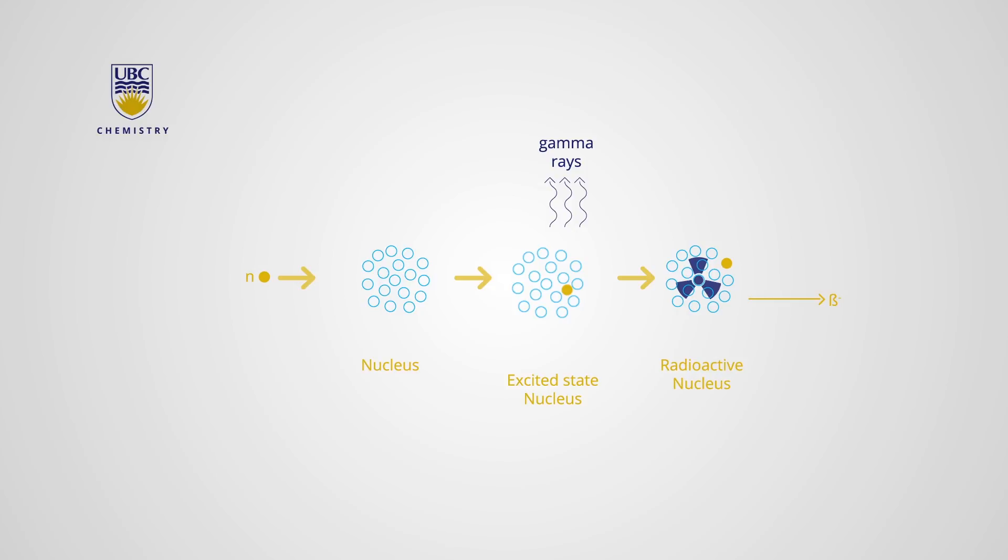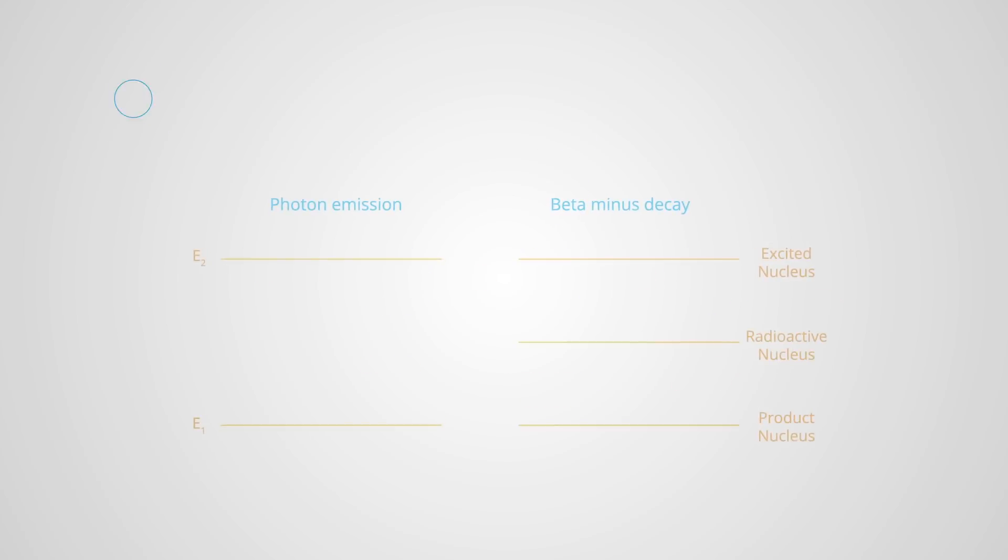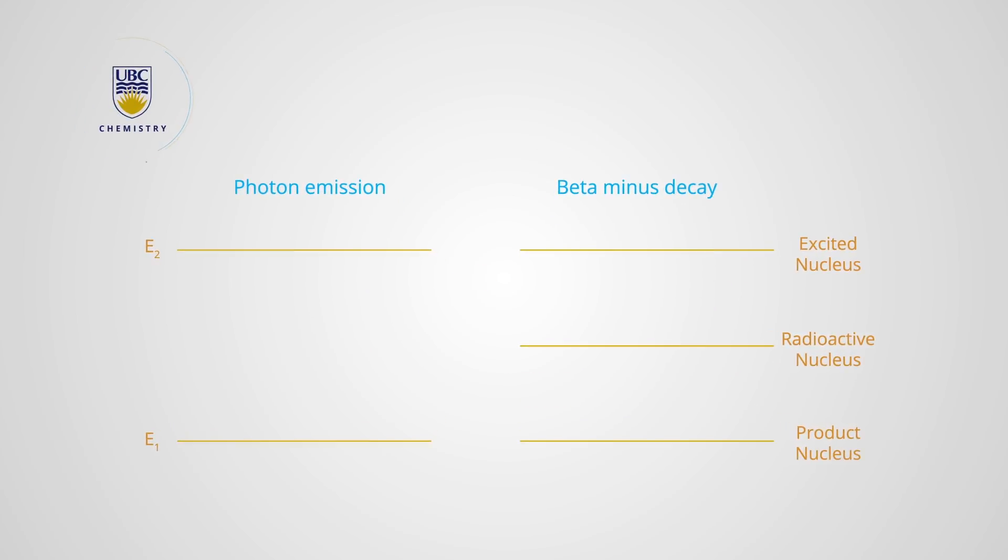De-excitation results in a ground state nucleus of the new isotope, which is still radioactive. It is unstable to beta decay. The beta decay process is similar to photon emission. Recall that in the photon emission process, the excited molecule relaxes to its ground state by emitting a photon that has the same energy as the difference between the two states. Similarly, during beta decay, the nucleus goes from its initial unstable state to a lower energy nuclear state and in the process emits a beta particle.